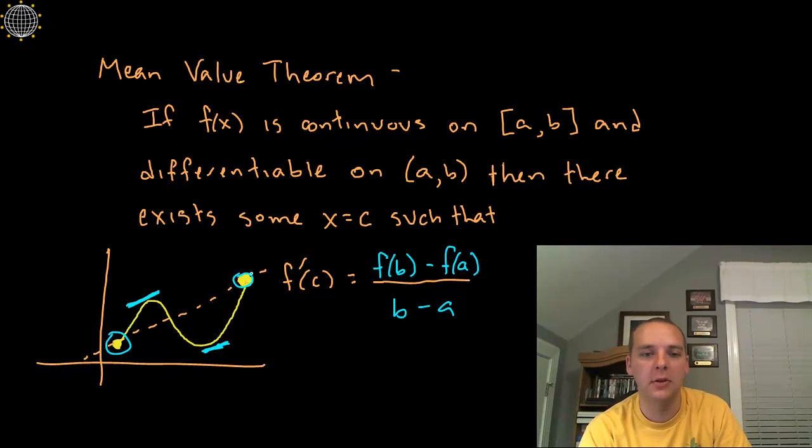If this is the average slope between A and B, then there's at least one place, there's a couple, whose instantaneous slopes, whose tangent slopes right here at C, matches the average slope over the entire interval.